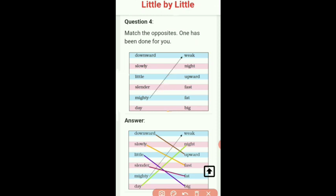Next word is downward. And the meaning of downward is neeche ki side, yaani neeche jate huye and the opposite of this word will be upward, yaani upar ki side.